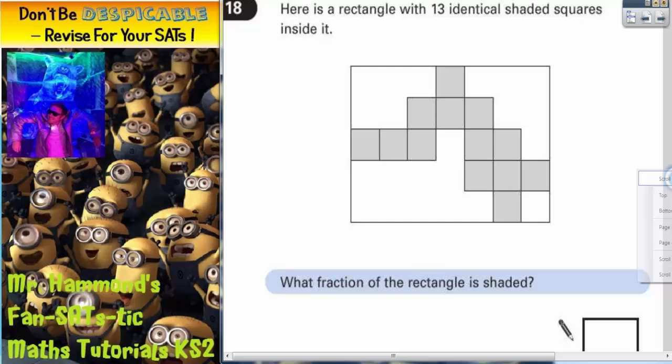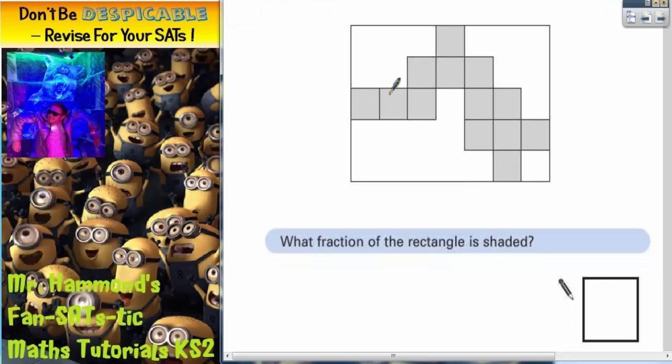Well, at this point it would be a lot easier if we could see how many of these squares actually fit inside the whole rectangle. But we can't because some of the lines aren't drawn in. So what we're actually going to do is draw those lines in to make it easier.